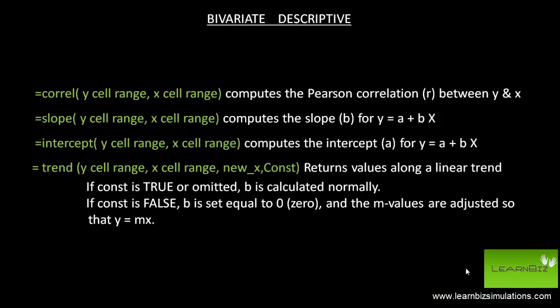The first function finds the correlation between two ranges x and y. The slope computes the slope for a line. The intercept computes the intercept.